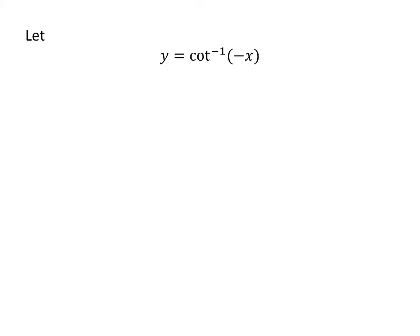To prove the identity, let us assume y is equal to arccotangent of minus x. As cotangent is the inverse of arccotangent, so cotangent of y is equal to minus x.